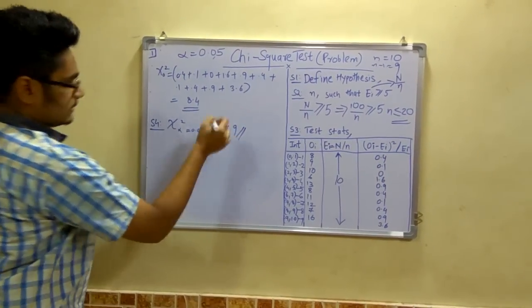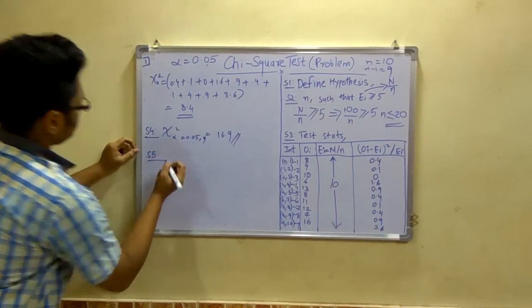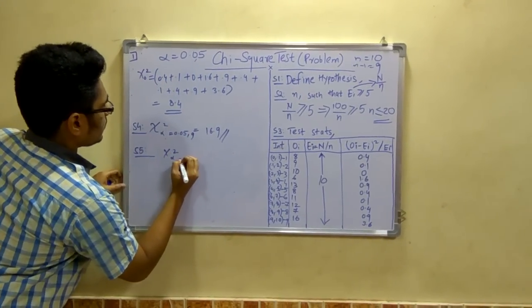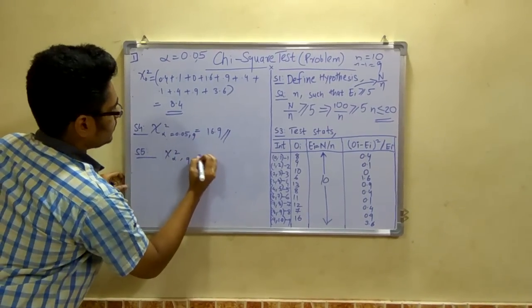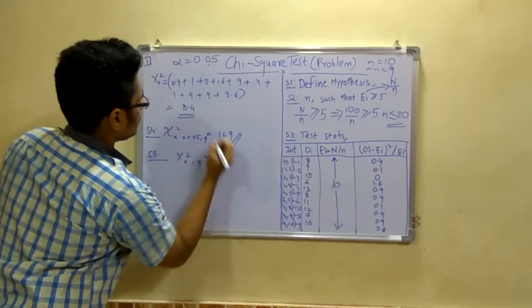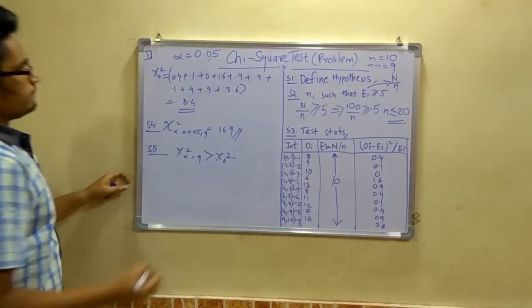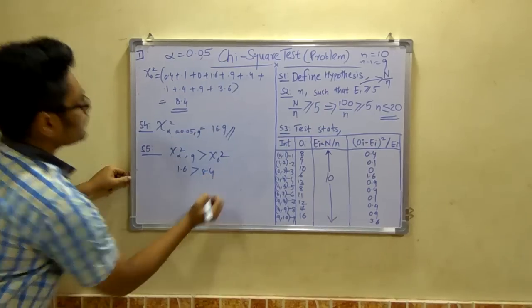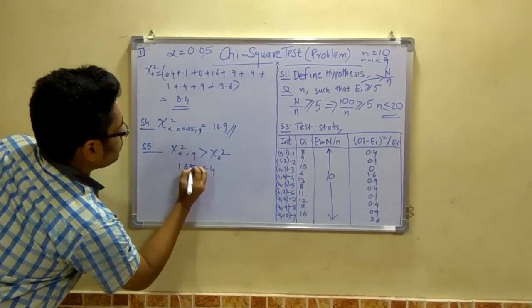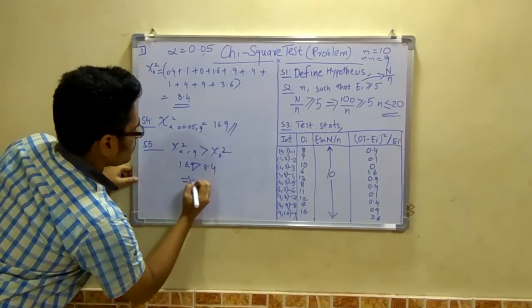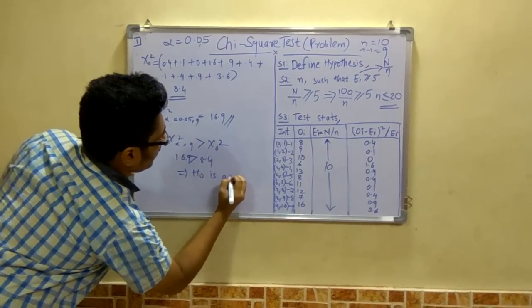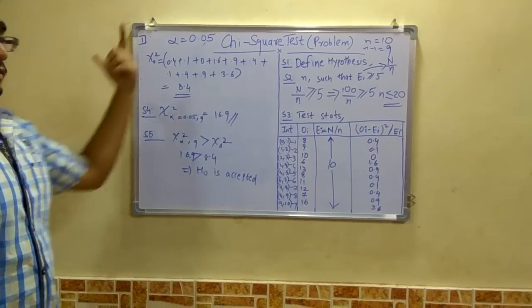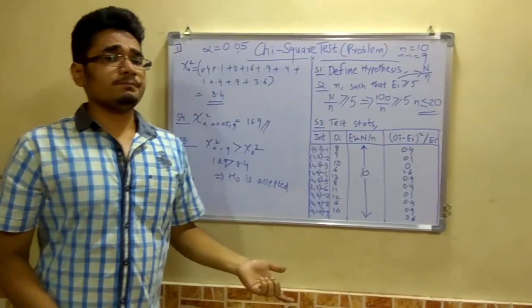So this threshold is 16.9. Now the final step is simple, just we have to compare this. This value, that is chi-alpha square at n-1, now this value is bigger than this chi0 square. So that is 16.9 is greater than 8.4. So this value lies within this range, so we can say that the hypothesis H0 is accepted. Therefore these given numbers are uniform. So this is how you solve a problem on chi-square test. Hope you found this video helpful.